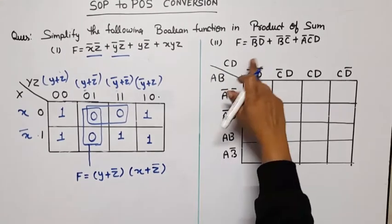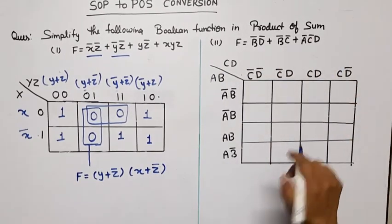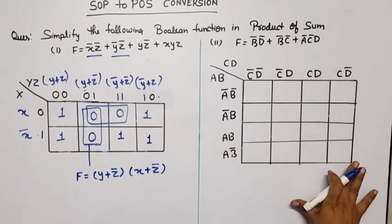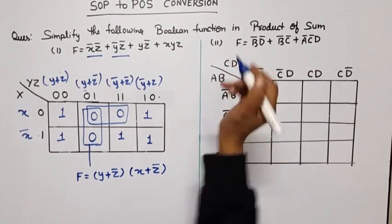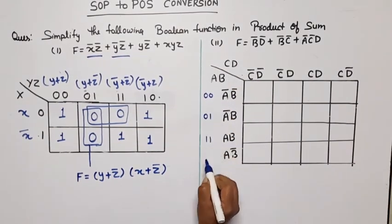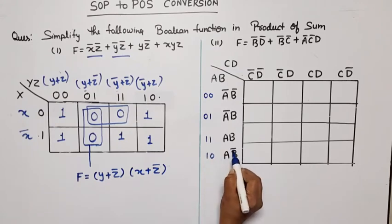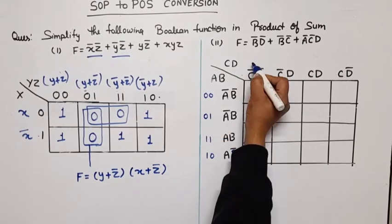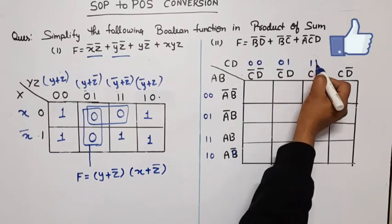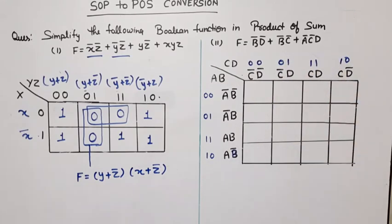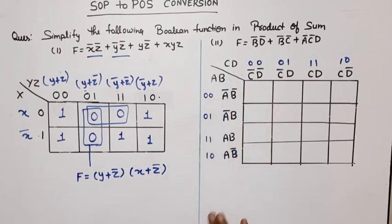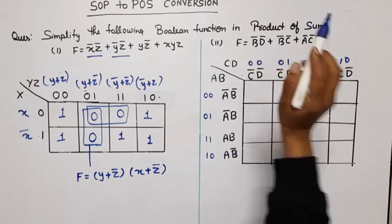Now the second example uses four variables a, b, c, d. I have made a four-variable K-map. On one axis the sequence is 00, 01, 11, 10 — we write the SOP first, then convert to POS. Again you can write variables or binary bits.